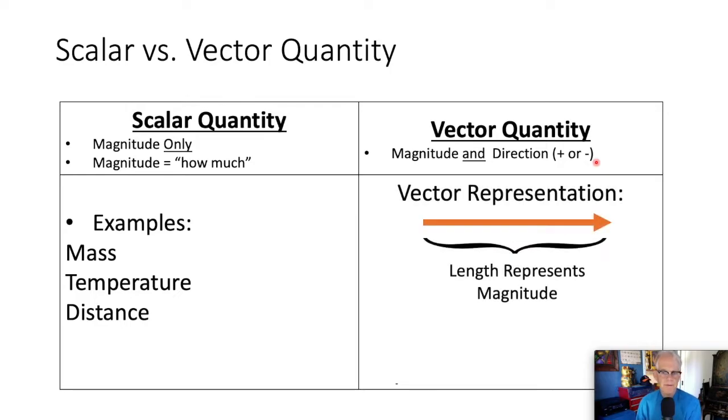Often, we'll represent a vector with an arrow. The length of the arrow will be scaled to the magnitude, and the direction of the arrow will tell us about the direction of the quantity. We'll mostly describe direction as positive or negative.